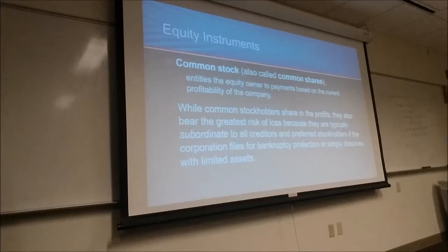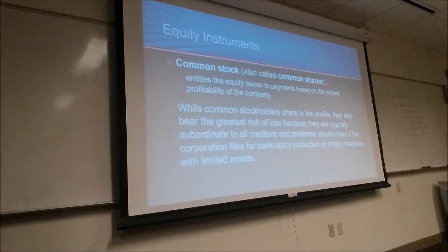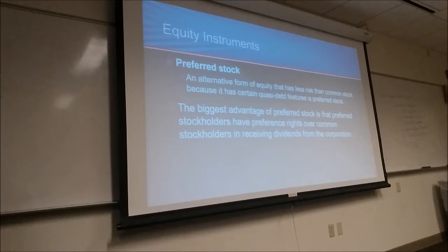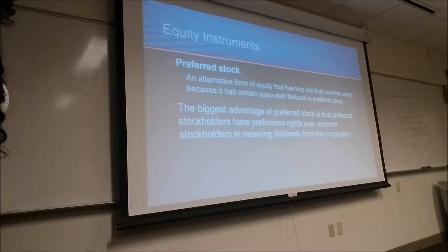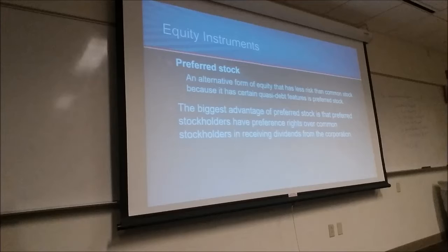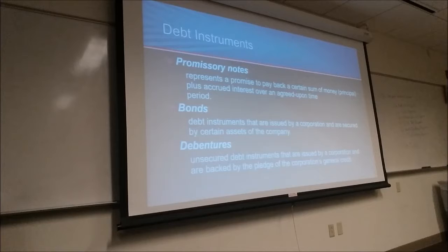Common stock entitles the equity owner to payments based on the current profitability of the company. While common stockholders share in the profits, they also bear the greatest risk of loss because they're typically subordinate to all other creditors. Preferred stock is an alternative with less risk because it has certain quasi-debt features, and preferred stockholders have preference rights over common stockholders. There are also debt instruments such as promissory notes, bonds, and debentures.